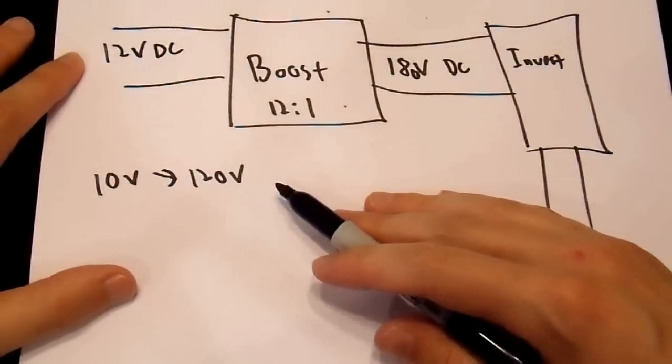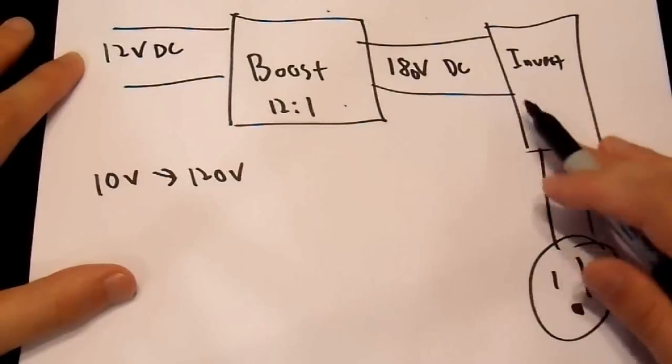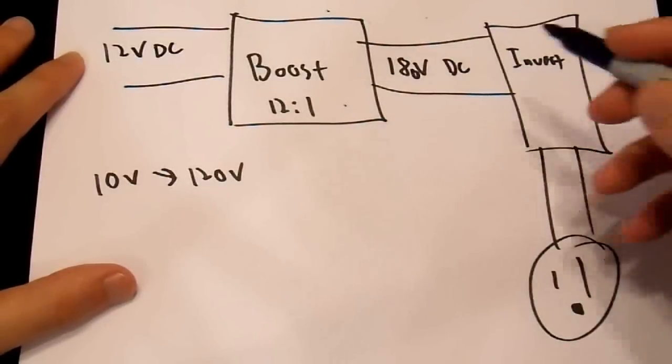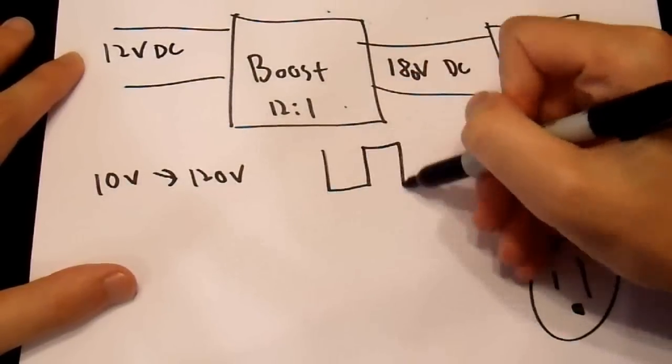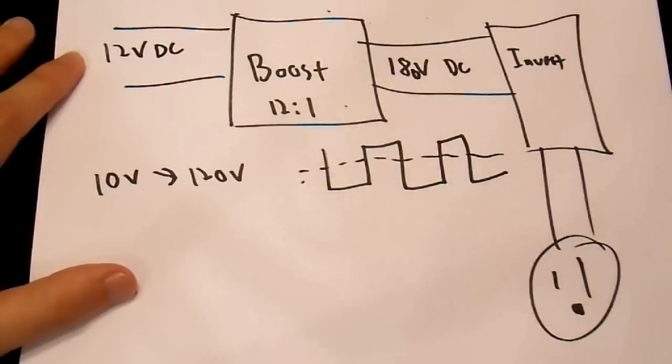But now you want 120 volts out. So when it gets to the invert stage, which now gets 120 volts DC, what kind of waveform do you get? Well, you get this waveform. A square wave. And that is not the waveform that you want. This should be a modified sine wave. Let's take the other extreme. Let's say you have 15 volts input. And you get a 12 to 1 boost. This yields a really high voltage.